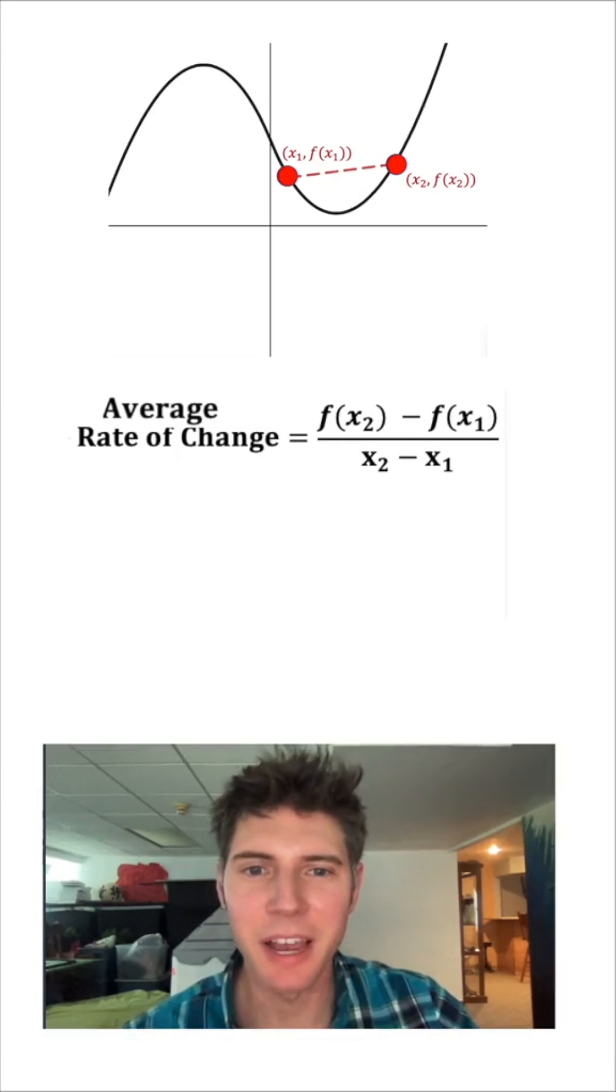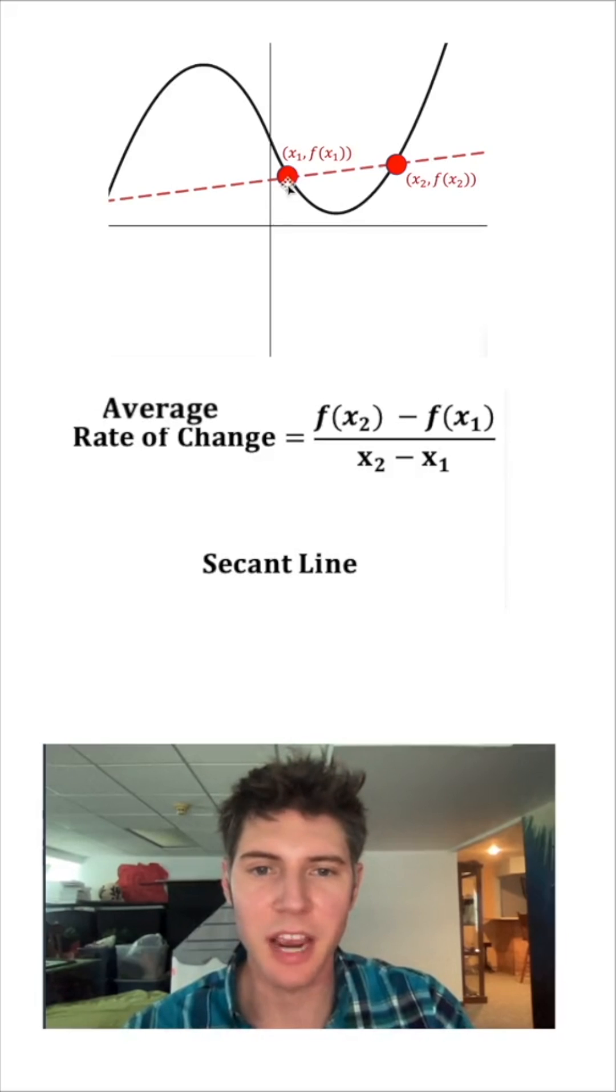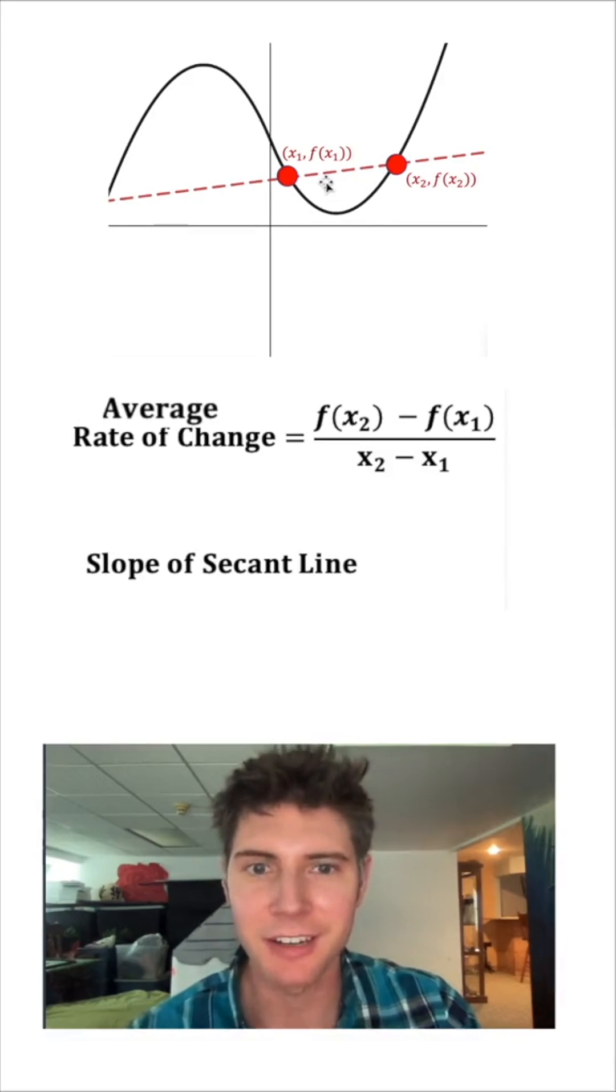If we extend this segment out, it gives us a line. And the name of this line is the secant line. And this formula that gives us the average rate of change, it's also going to give us the slope of that secant line.